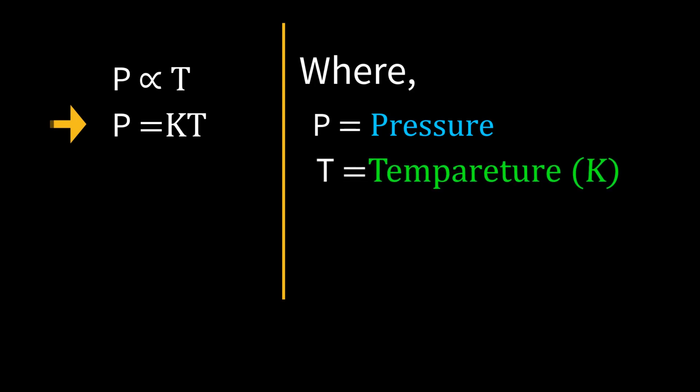So, we can write P equals KT, where P equals pressure, T equals temperature in Kelvin, and K is a proportionality constant. Now, we can rearrange this equation: P over T equals K.